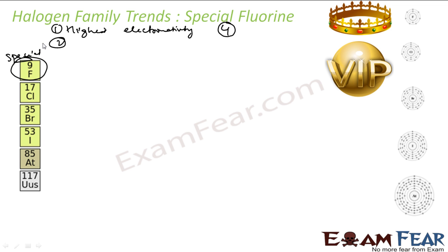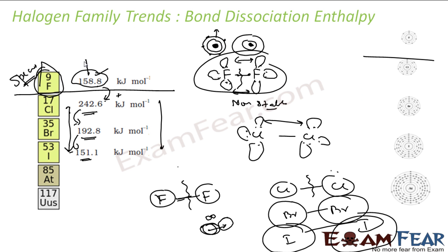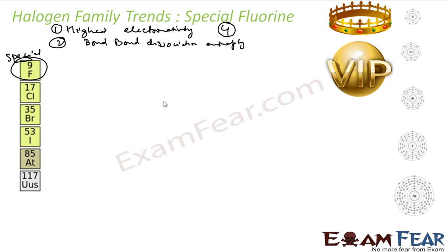Fluorine has a very low bond dissociation enthalpy. We have just seen that it is 158 kJ per mole, which is lower compared to what might be expected.